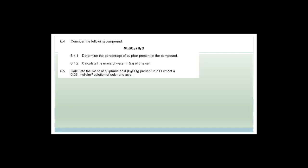Consider the compound magnesium sulfate dot seven H2O. The dot means that this is called water of crystallization. It means that for every one magnesium sulfate, there are seven water molecules attached to it. In mathematics the dot means multiplication, but in this chemical notation it means one magnesium sulfate plus seven water molecules attached to it.